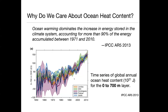Firstly, it's used as evidence of global warming. The second is that ocean heat content change has been used as the main constraint for estimating the radiation imbalance at the top of the atmosphere, which is a very important estimate for estimating the sensitivity of the whole climate system to increasing greenhouse gases.